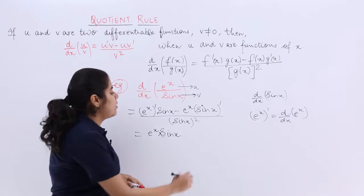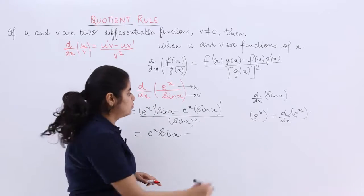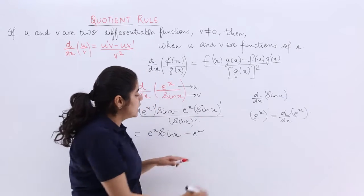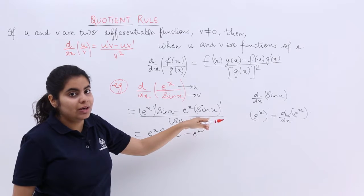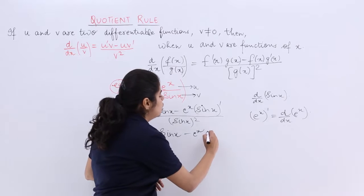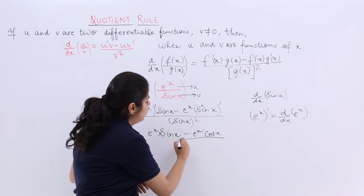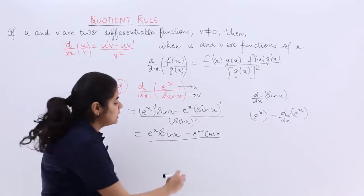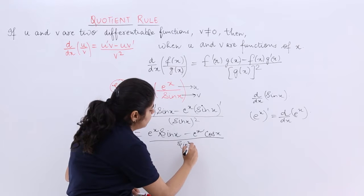Sin x is as it is. So it is u dash v minus u v dash. What is u? e raised to the power x. What is v dash? What is differentiation of sin x with respect to x? It is nothing but cos x whole upon v square. That means sin square x, right?